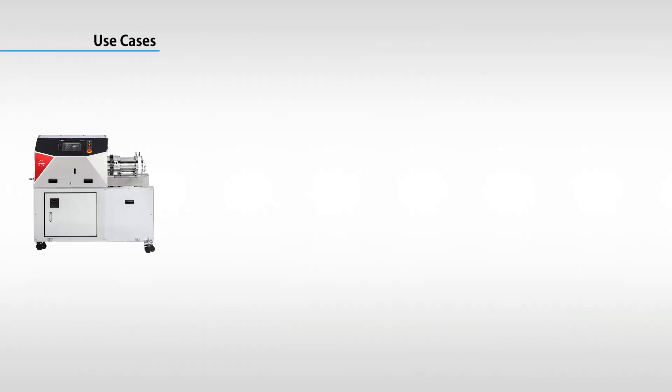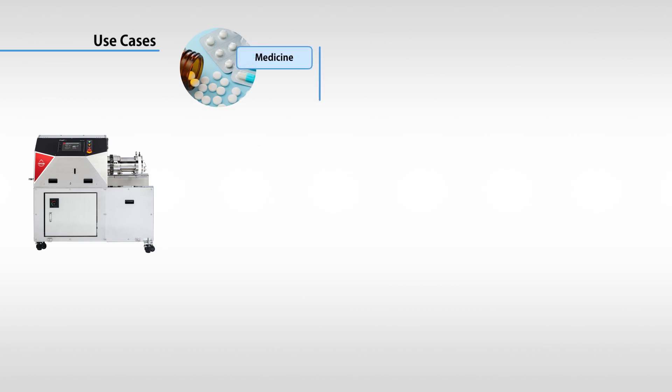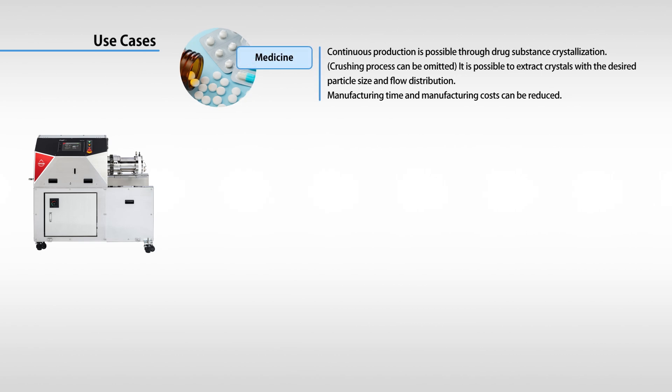Continuous production of the API crystallization process allows the pulverization process after drying to be omitted. This can reduce manufacturing costs.